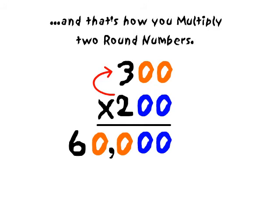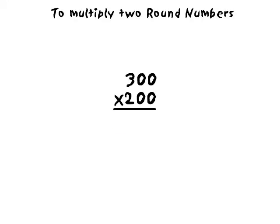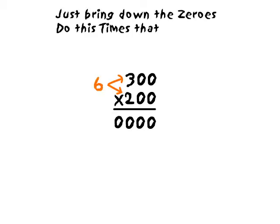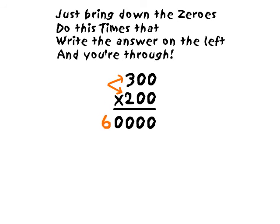So that's how you multiply 2 round numbers. Or to put it another way, to multiply 2 round numbers, here's all you got to do. Just bring down the zeros, do this times that, write down the answer on the left and you're through. And there's the comma-lama-comma.